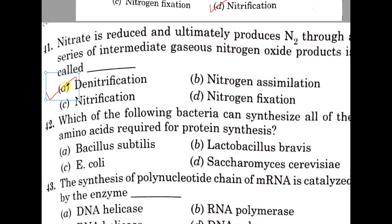Question number 42. Which of the following bacteria can synthesize all of the amino acids required for protein synthesis? A: Bacillus subtilis, B: Lactobacillus brevis, C: E. coli, D: Saccharomyces cerevisiae. The correct answer is C, E. coli. E. coli cannot only synthesize all the amino acids, but it can also transport all the essential amino acids from the extracellular space into the cell.